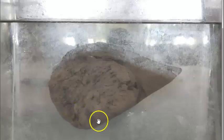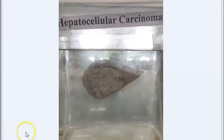Hepatocellular carcinoma — in gross you will have expanding type, multifocal type, and infiltrating type. In microscopy you will see trabecular sinusoidal pattern, pseudoglandular acinar pattern, compact pattern, and cirrhous pattern. In the most common pattern — trabecular sinusoidal — you will see trabeculae with cells arranged in 2 to 8 cell-thick cords.